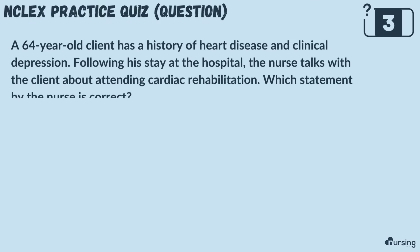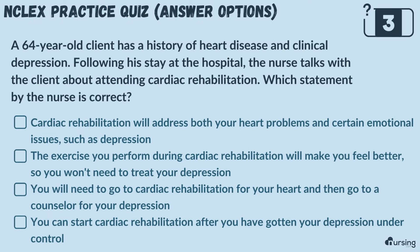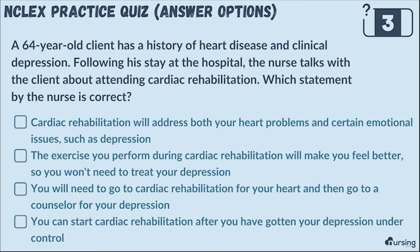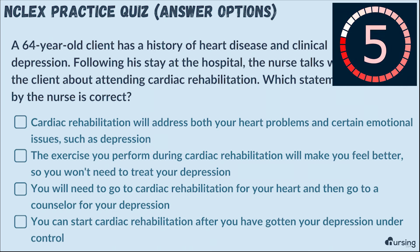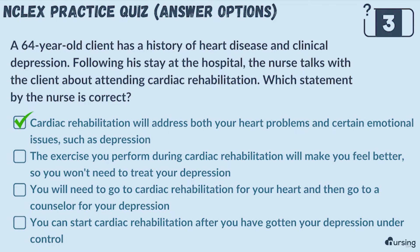A 64-year-old client has a history of heart disease and clinical depression. Following his stay at the hospital, the nurse talks with the client about attending cardiac rehabilitation. Which statement by the nurse is correct? Is it: cardiac rehabilitation will address both your heart problems and certain emotional issues such as depression; the exercise during cardiac rehabilitation will make you feel better so you won't need to treat your depression; you will need to go to cardiac rehabilitation for your heart and then go to a counselor for your depression; or you can start cardiac rehabilitation after you have gotten your depression under control? The correct answer is: cardiac rehabilitation will address both your heart problems and certain emotional issues such as depression.